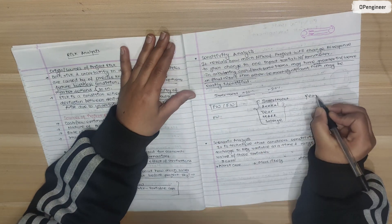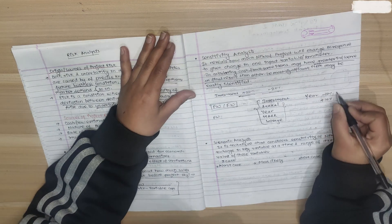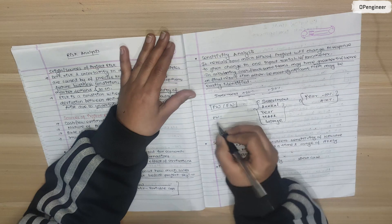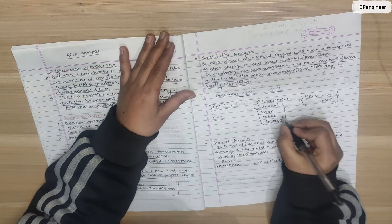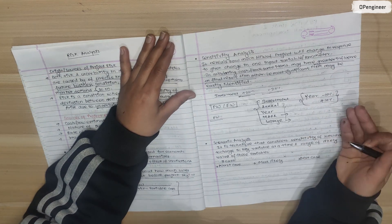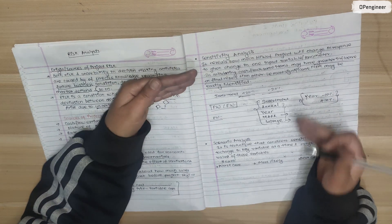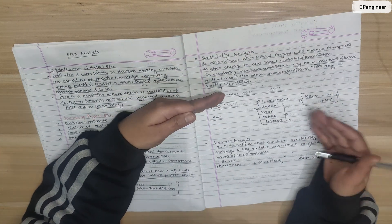Similarly, if we change the year by plus or minus 10%, we see how much change occurs in present worth. Similarly, for RR and salvage value, we change by plus or minus some percentage and see how it affects the whole project's present worth. This is what we study in sensitivity analysis.